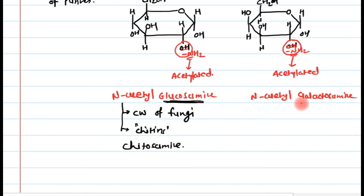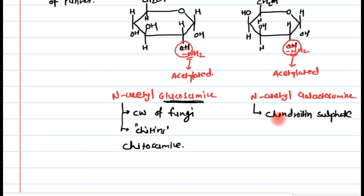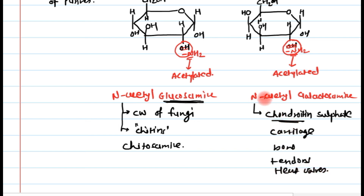N-acetyl galactosamine is an important constituent of chondroitin sulfate, which is found in cartilage, bone, tendons, and heart valves. Because N-acetyl galactosamine is found richly in chondroitin sulfate, the other name of galactosamine is chondroitin sulfate. This completes our discussion of two sugar derivatives: deoxy sugars and amino sugars.